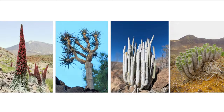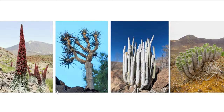This one is called Echium wildpretii, and it's about as tall as the top of this screen — very, very big. It produces this flowering stem after two years, and then the plant dies. You can walk among forests of these very strange flowers. This is a Drachina, and you have Drachina growing in your grounds in Benkulu — but this is a very rare one that grows only on a few cliffs in the Canary Islands. I had to climb up a cliff to reach it, because I like heights.